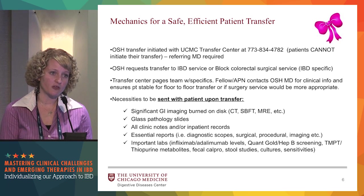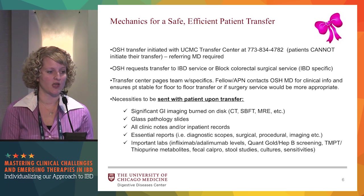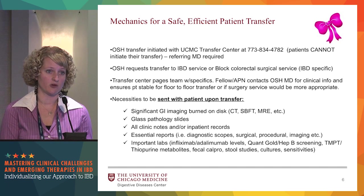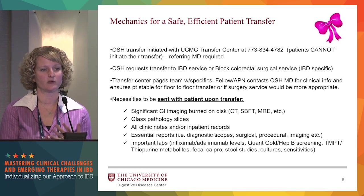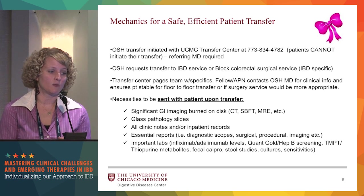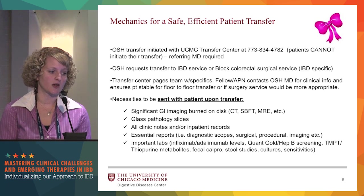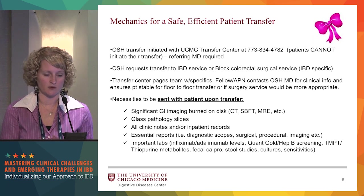To help expedite care, we prefer certain items come with the patient. The most important two are GI imaging on a disc sent with the patient — whether it's a medical or surgical problem or if the patient needs to be drained by our IR department, having the disc prevents delays and avoids re-scanning. Glass pathology slides are also important — we have a designated pathology group well-versed in Crohn's and colitis. All clinic notes, inpatient records, procedure and operative reports are helpful, as well as any important labs, metabolite levels, and drug levels, which can also prevent future costs to the patient.